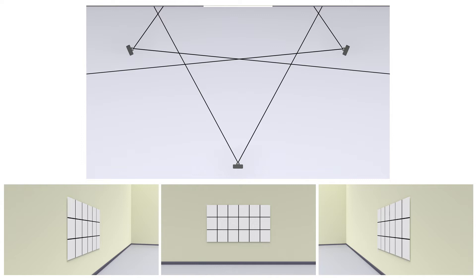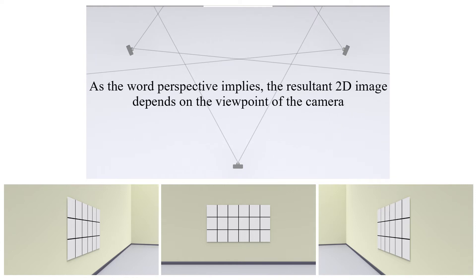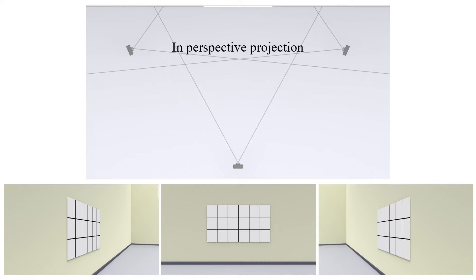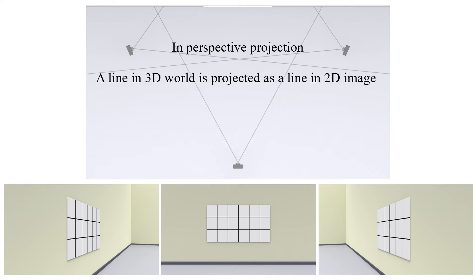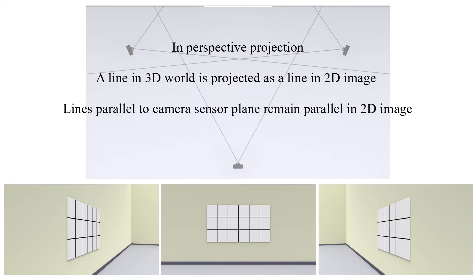Three cameras, their positions and photos. As the word perspective implies, the resultant 2D image depends on the viewpoint of the camera. In Perspective Projection, a line in the 3D world is projected as a line in the 2D image. Lines parallel to the camera sensor plane remain parallel in the 2D image, but other lines are not parallel anymore.